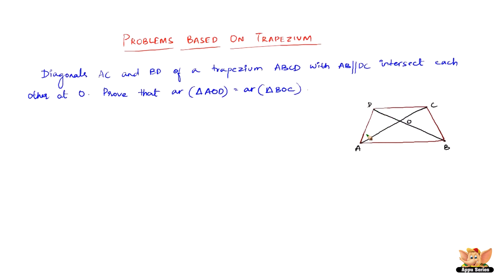Now clearly, triangles ACD and BCD lie on the same base CD and also between the same parallel lines AB and DC. Therefore, area of triangle ACD equals area of triangle BCD.